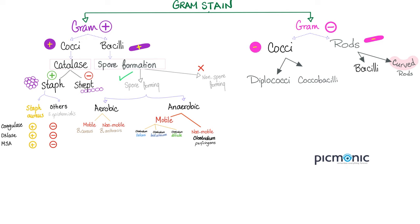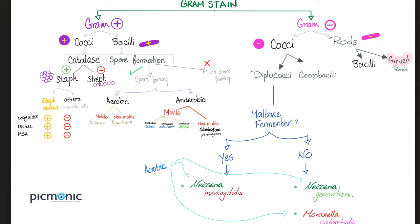As for the rods, we divide them into bacilli, which are straight rods, and curved rods. If I am a diplococcus, the next question is: can I ferment maltose or not? If I can, I am a maltose fermenter such as Neisseria meningitidis, which causes bacterial meningitis. If I am not a maltose fermenter, I could be Neisseria gonorrhoeae or Moraxella catarrhalis. Neisseria gonorrhoeae causes gonorrhea, one of the famous sexually transmitted infections. Today we're also talking about chlamydia, which causes STIs.